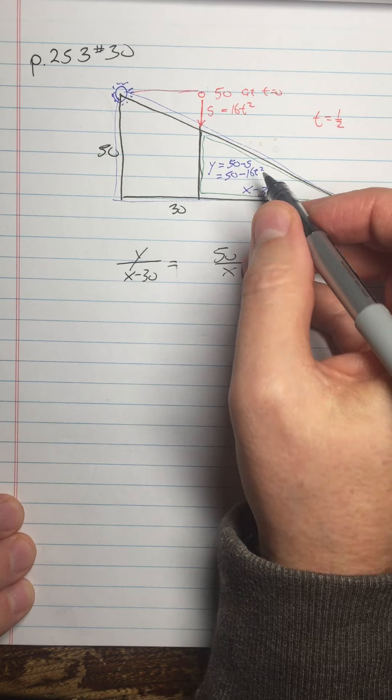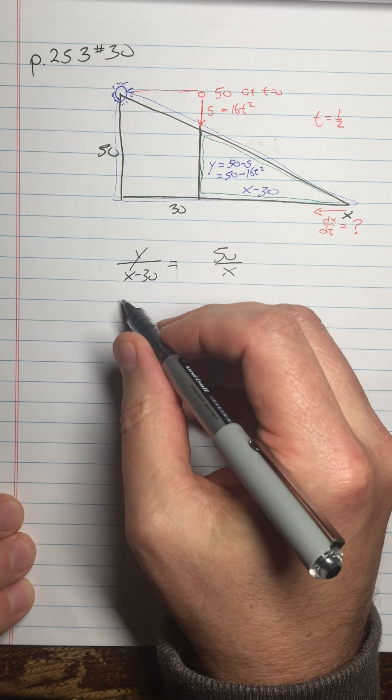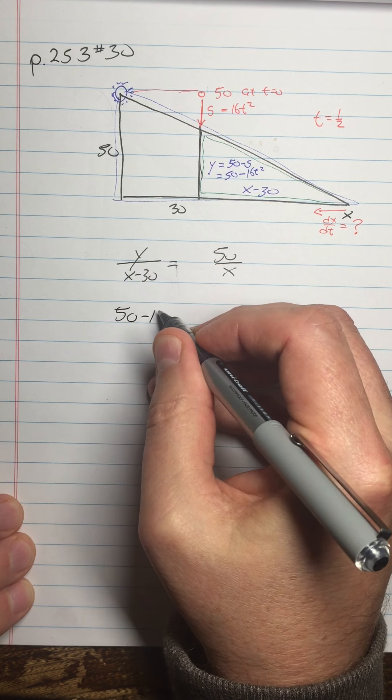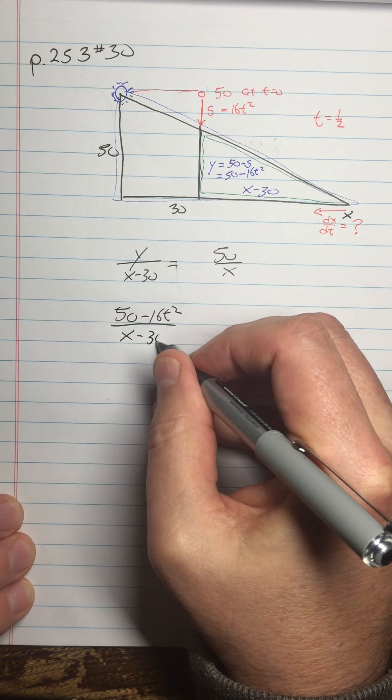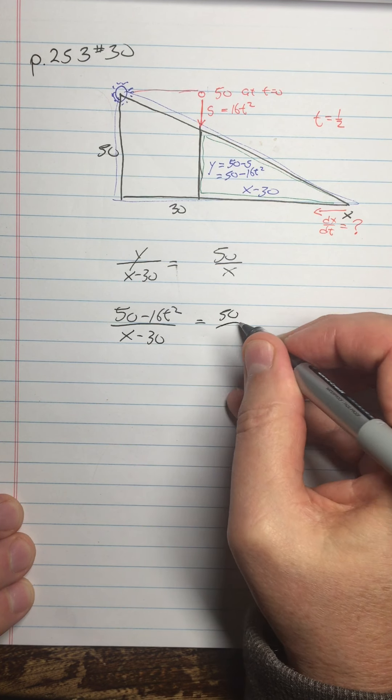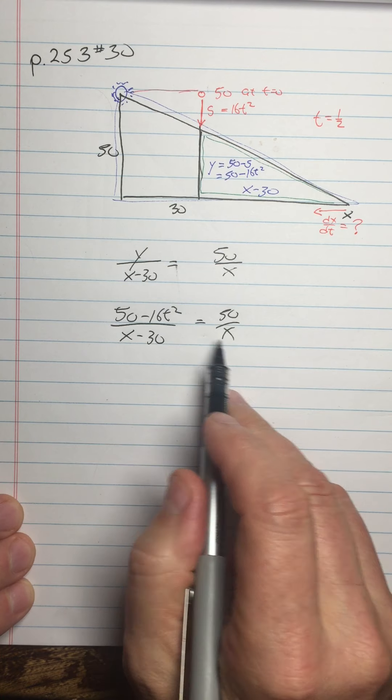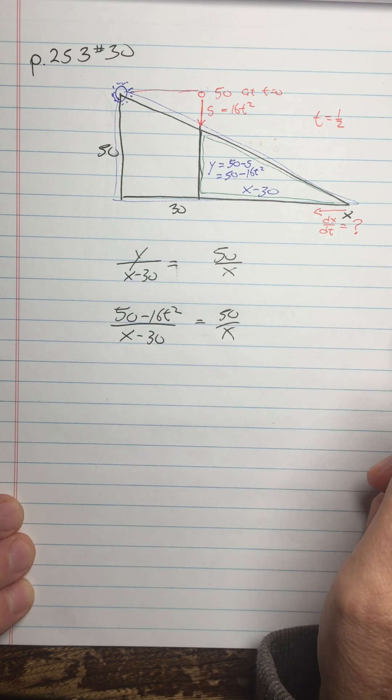So now, since I know y is 50 minus 16t squared, I know that 50 minus 16t squared over x minus 30 is equal to 50 over x. Now I've got an equation that relates x and t, so I ought to be able to get dx dt pretty easily.